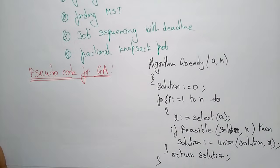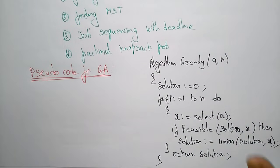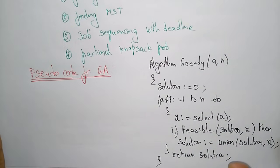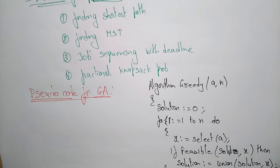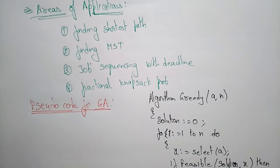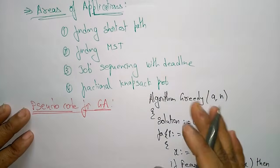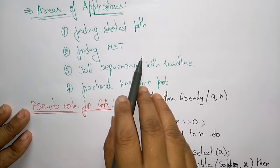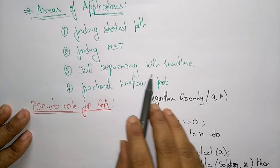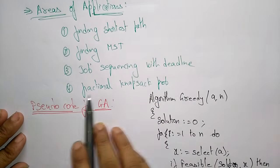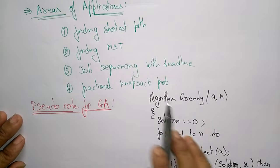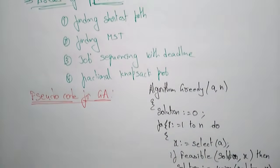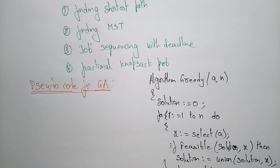This is the pseudo code for the greedy algorithm. In the next video, we will discuss each application — finding shortest path, finding minimum spanning tree, job sequencing with deadlines, and fractional knapsack problems. Thank you.